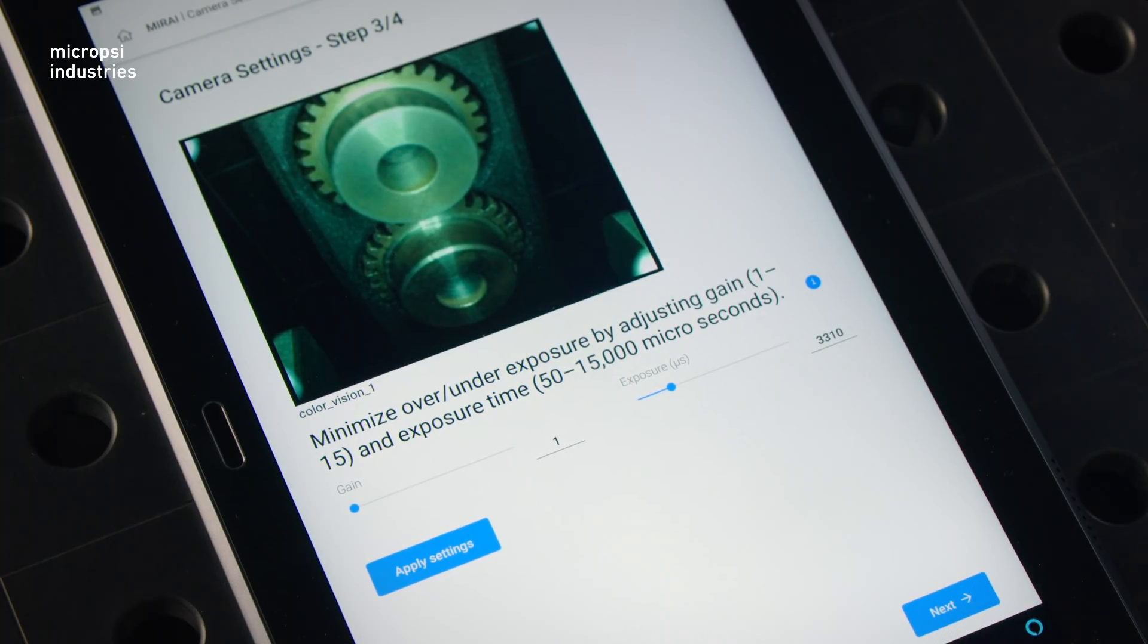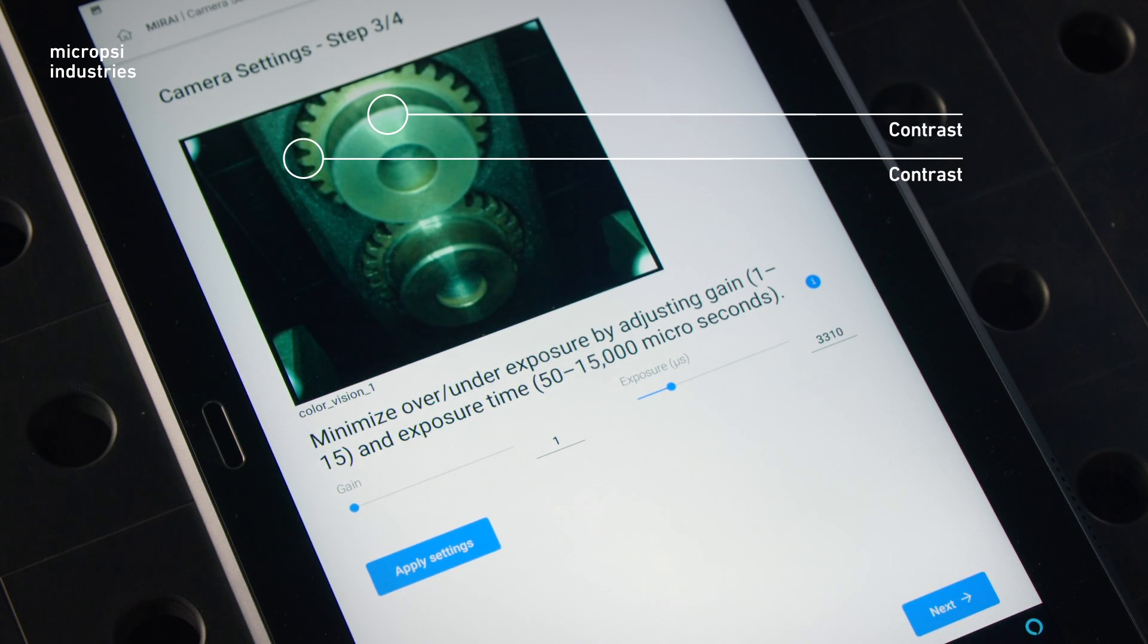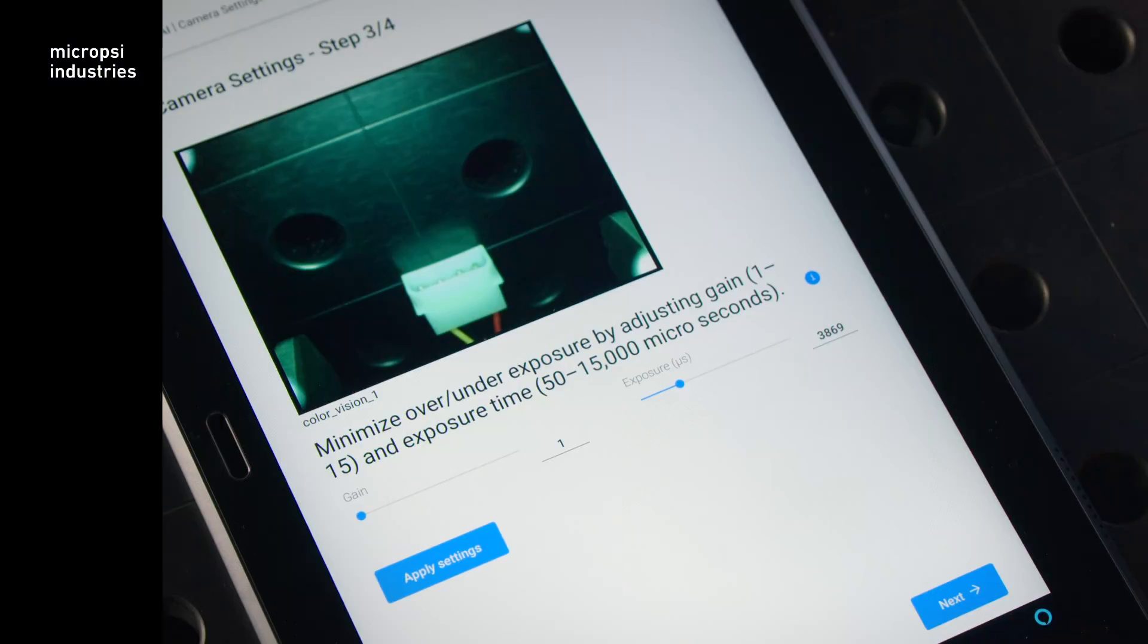Second, you want high contrast in the relevant parts of the image, in this case the target object here. It's fine if other parts of the image are less visible if they are not important for the task.